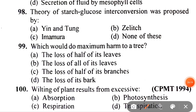Next: which would do maximum harm to a tree? A. Loss of half its leaves, B. Loss of all its leaves, C. Loss of half its branches, D. Loss of its bark. The correct answer is D — loss of its bark.